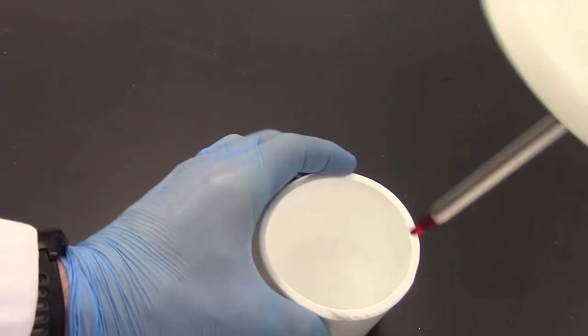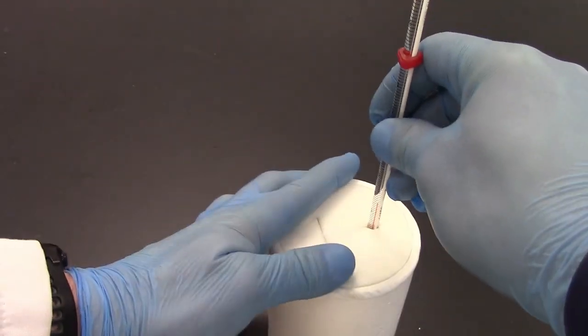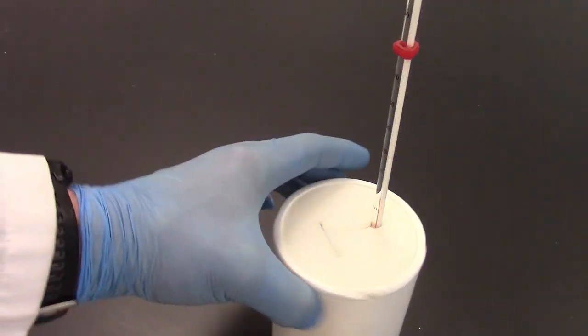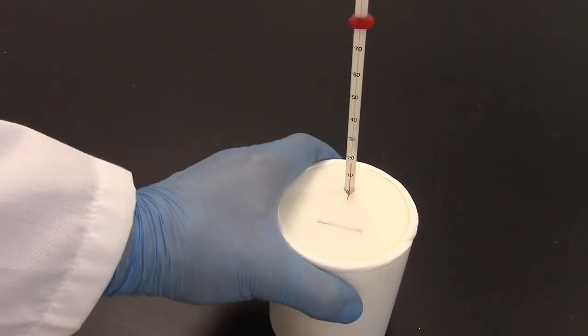And then I'm going to insert it into my calorimeter here and I'm going to make sure that the tip is touching the water level there. So it should look just like this. And I'm going to set that off to the side.